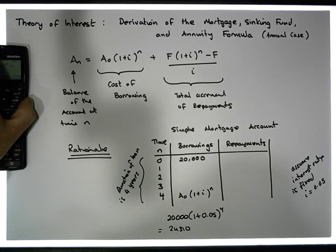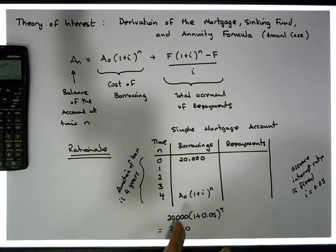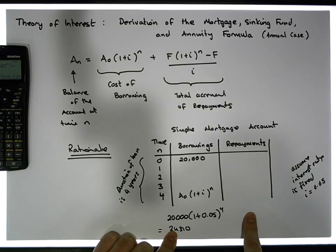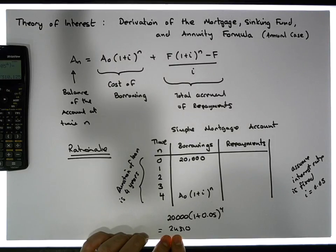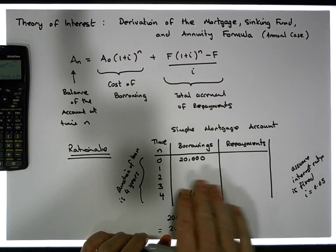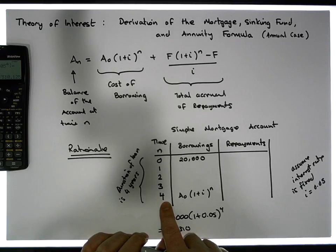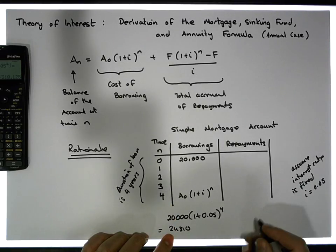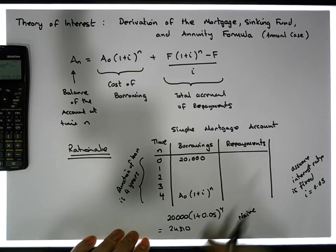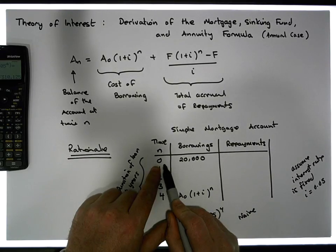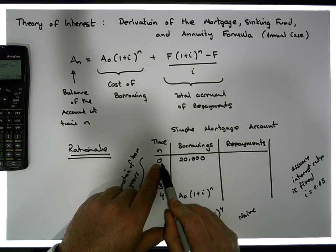From a mortgage perspective, what we want to balance out is the cost of borrowing with the cost of repayments. We need to make sure that all of our repayments sum up to twenty-four thousand three hundred and ten euros. Let's take a naive approach and say we start paying five thousand euros each year at the end of each year.